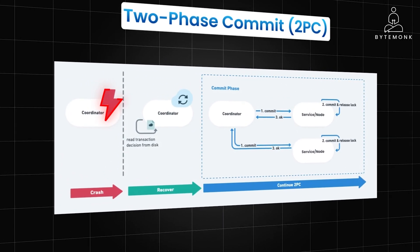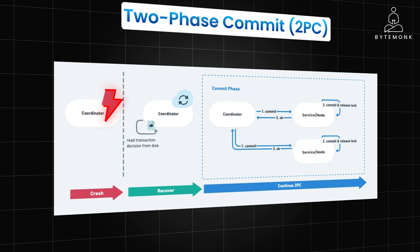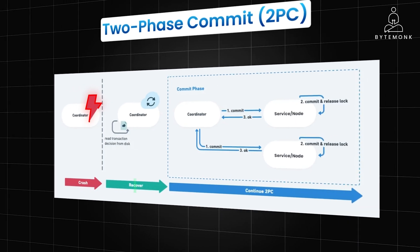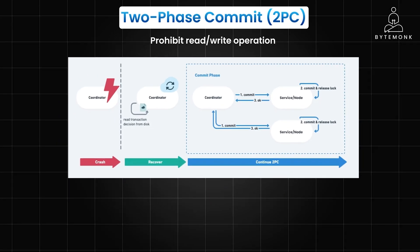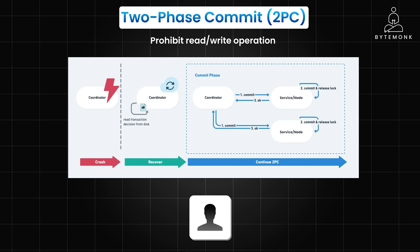If the coordinator crashes before making the final decision for the commit phase, it can simply send the abort request to all nodes. Until the coordinator recovers, all nodes that promised to commit the transaction would have to prohibit read or write operations on the affected data. Timeout would not help because participant nodes cannot simply abort the transaction after a certain period, since they promised to follow the final decision from the coordinator. Therefore, if the coordinator does not recover successfully, a person might have to manually intervene to make a decision on the ongoing transaction on each participant node.